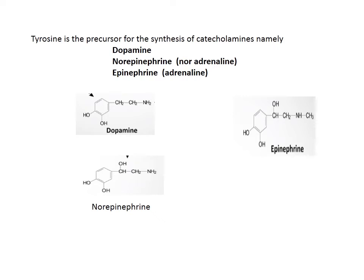Tyrosine is the precursor for the synthesis of catecholamines: dopamine, norepinephrine, and epinephrine. The structure of dopamine is the phenyl ring with two hydroxy groups, where the amino group is present but the COO⁻ is absent. Epinephrine has the same core structure as dopamine with an additional OH and CH₃ group. Norepinephrine is the dopamine structure with an OH added but without the CH₃.